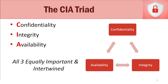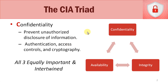Let's talk about confidentiality in detail. What's the purpose of confidentiality? Its name implies its goal: the main purpose is to prevent unauthorized disclosure of information. The key word here is 'unauthorized.' We only want the people that should have access to be able to get access — we want to prevent unauthorized access while allowing authorized access.